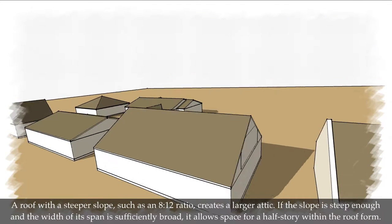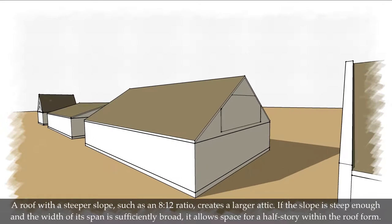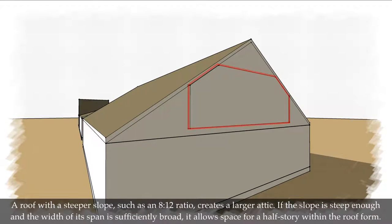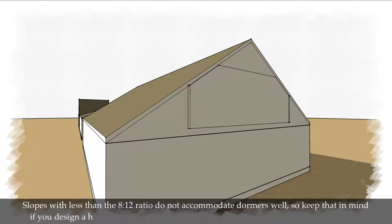A roof with a steeper slope, such as an 8-12 ratio, creates a larger attic. If the slope is steep enough and the width of its span is sufficiently broad, it allows space for a half-story within the roof form. Slopes with less than the 8-12 ratio do not accommodate dormers well, so keep that in mind if you design a half-story and need to place dormers in the roof for light and ventilation.